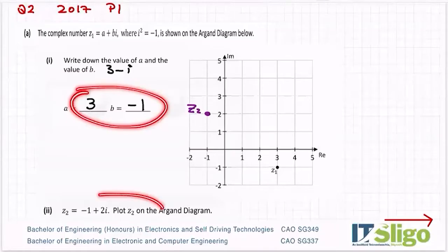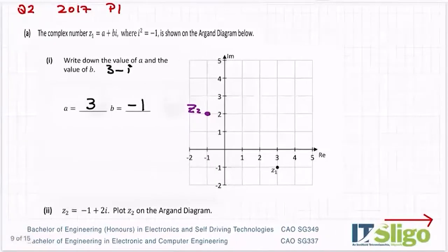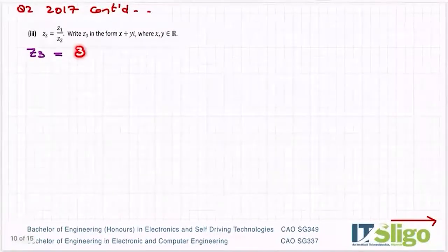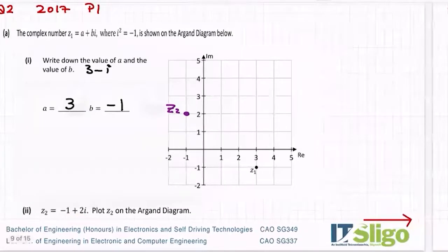Part three then is the division. z3 is equal to z1 over z2. Write z3 in the form x plus yi where x and y is an element of R. So make sure you write down the complex numbers in the order that they gave you. So z1 was on the top, so z1 is three minus i, and z2 is on the bottom, so z2 is minus one plus two i.